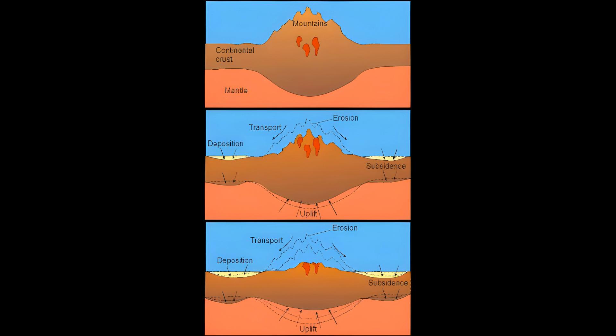Tectonic uplift is the geologic uplift of Earth's surface that is attributed to plate tectonics. While isostatic response is important, an increase in the mean elevation of a region can only occur in response to tectonic processes of crustal thickening, such as mountain-building events, changes in the density distribution of the crust and underlying mantle, and flexural support due to the bending of rigid lithosphere.